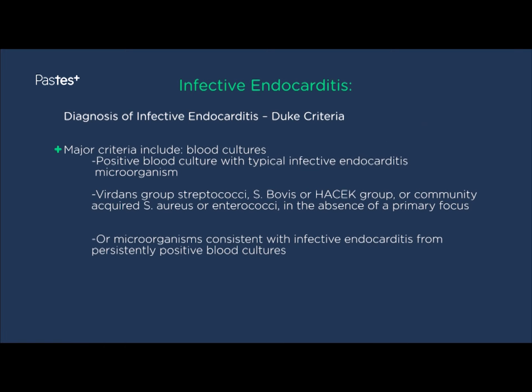Different criteria have been developed for the diagnosis of infective endocarditis. One of the best of these is the Duke's criteria. There are certain major and minor criteria which together build up a picture consistent with the diagnosis of endocarditis. The major criteria in blood cultures include positive blood cultures with a typical infective endocarditis microorganism, such as Strep viridans, S. bovis, the HACEK group, community-acquired Staph aureus, or enterococci in the absence of a primary focus, or microorganisms consistent with infective endocarditis from persistently positive blood cultures.